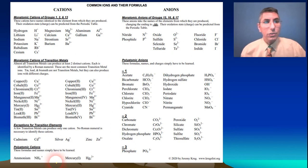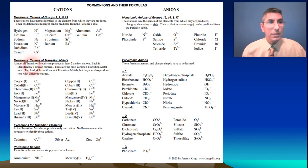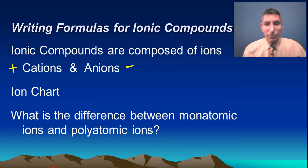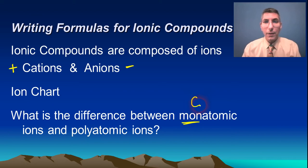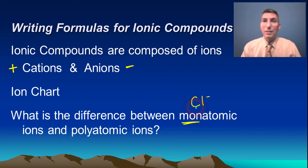As we look at the ion chart, you might notice vocabulary words like 'monatomic' about the middle of the page. The answer is kind of hidden in the word itself — monatomic sounds like 'mono,' meaning one atom. For example, the chloride ion has one chlorine atom, so we say chloride is a monatomic ion.